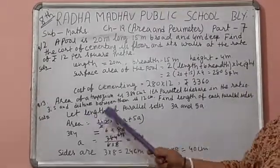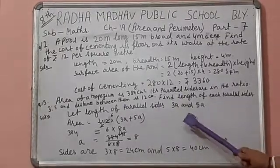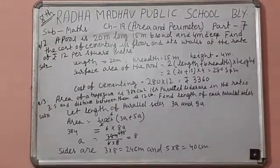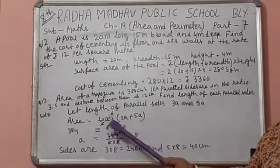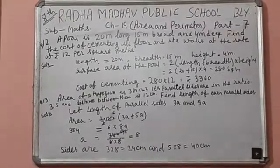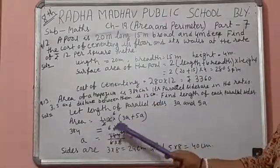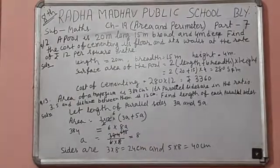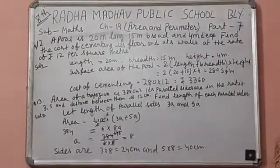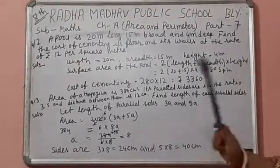Let the length of parallel sides be 3a and 5a. Area equals half into height into sum of two parallel sides. Area given is 384 equals 6 × 8a. So, a equals 384 upon 48. The answer is 8.